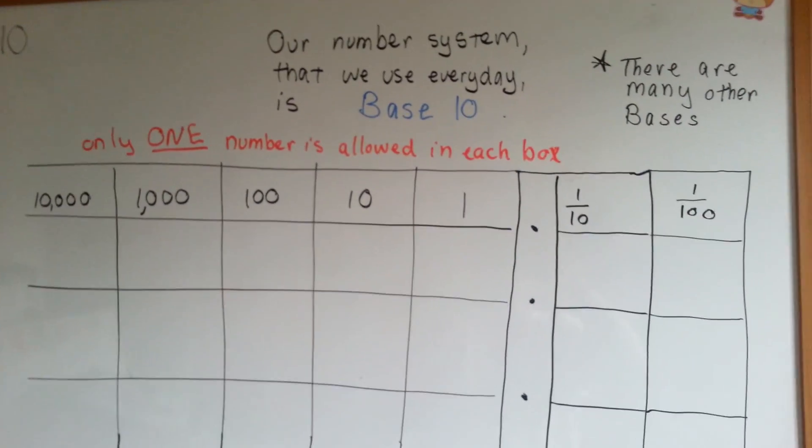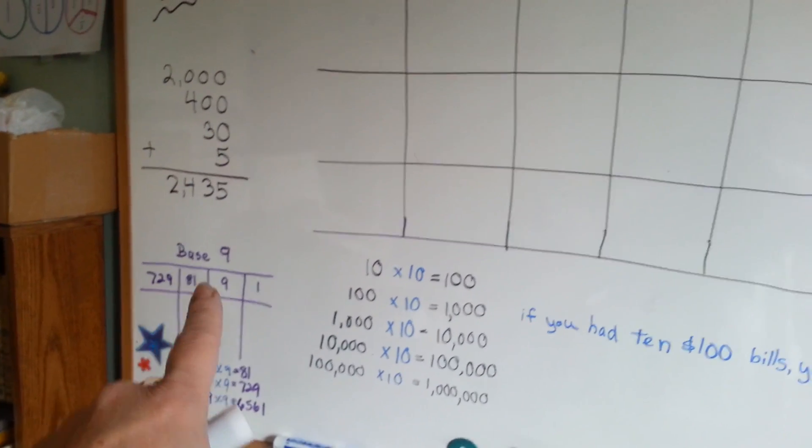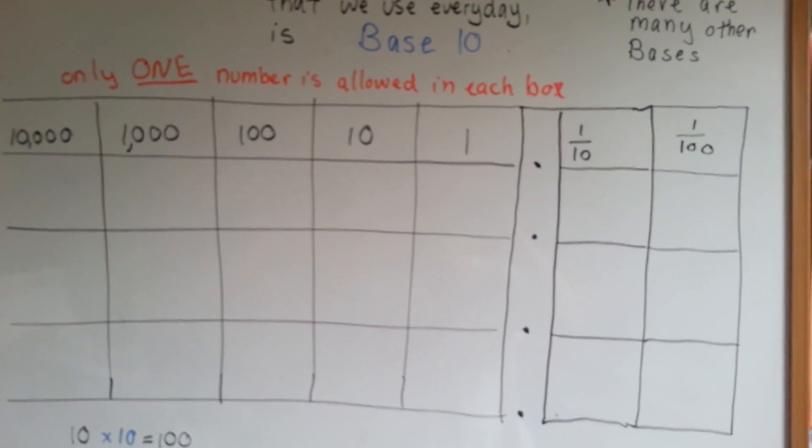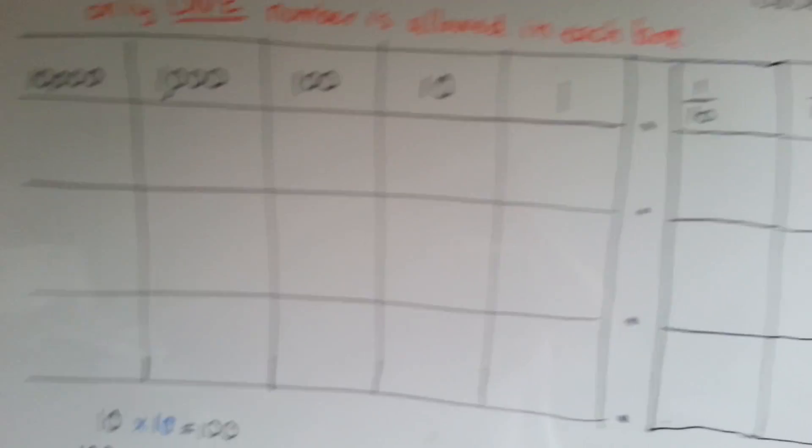There's base 2, base 3, base 4, base 9, which I'll show you in a second. But our base 10 place value system works off of tens.